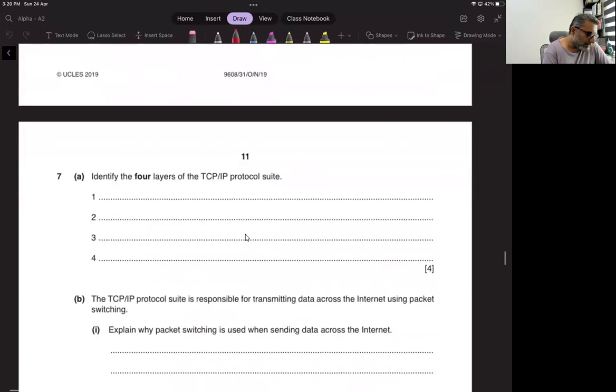Now identify four layers of TCP IP protocol. The first one is application layer, second one is transport layer, third one is internet layer or network layer, fourth one is data link layer.